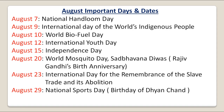Next month is August. On 7th of August we celebrate National Handloom Day. 9th of August is celebrated as International Day of the World's Indigenous People. On 10th of August we celebrate World Biofuel Day. On 12th of August we celebrate International Youth Day. Note that National Youth Day is celebrated on 12th of January, but International Youth Day is celebrated on August 12th. On 15th of August we celebrate Independence Day. 20th of August is celebrated as World Mosquito Day and Sarbhauna Divas, which is the birth anniversary of Rajiv Gandhi. On 23rd of August we celebrate International Day for the Remembrance of the Slave Trade and its Abolition. And on 29th of August we celebrate National Sports Day, which is the birth anniversary of the Wizard of Hockey, Dhyanchand.